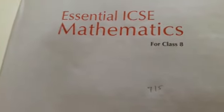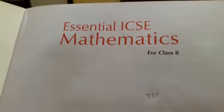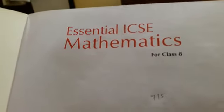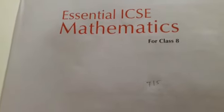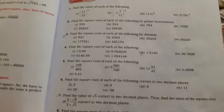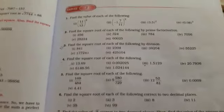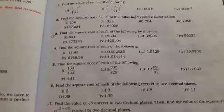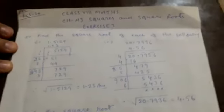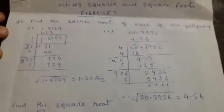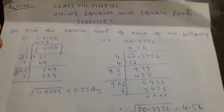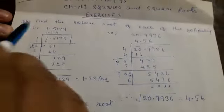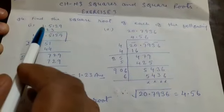Hello dear children, this is a Class 8 math class. In the previous class we started Chapter 3: Squares and Square Roots, and we completed exercise questions up to number three. Now we are going to start question number four: find the square root of each of the following.